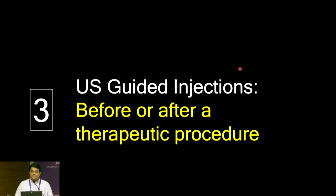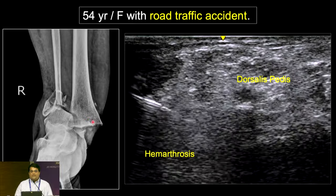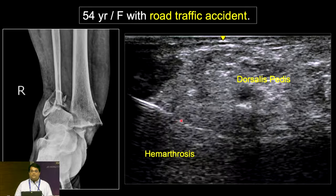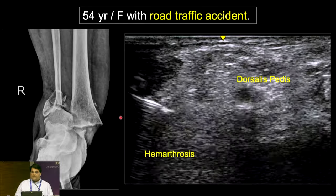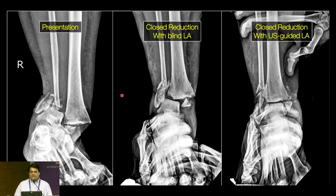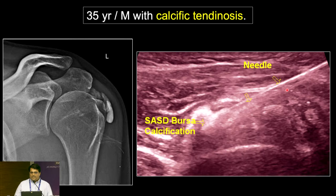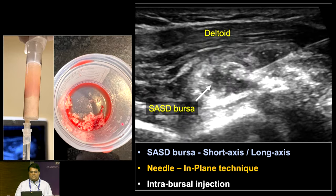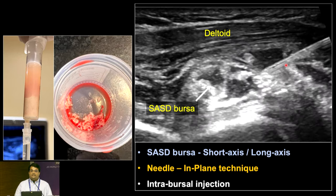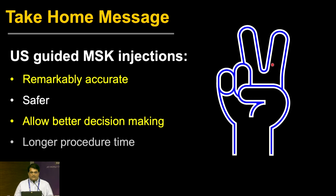Ultrasound-guided injections can also be used before a therapeutic procedure — for instance, a patient with a trimalleolar fracture where appropriate reduction could not be achieved due to pain. With blind local anesthesia the reduction failed; with ultrasound-guided local anesthesia it was achieved successfully. For calcific tendinosis, after aspirating the calcium, we inject under ultrasound guidance within the subacromial subdeltoid bursa. Take-home messages: ultrasound-guided injections are remarkably accurate, safer, and allow better decision-making. Do not shy away from using ultrasound when in difficulty.